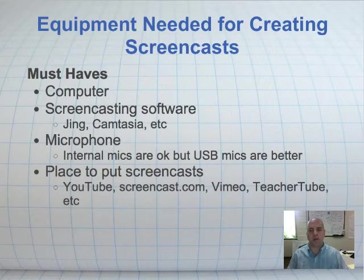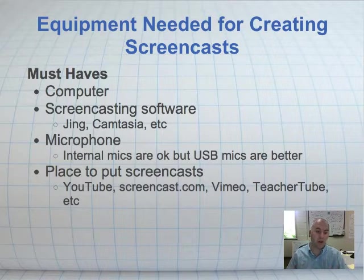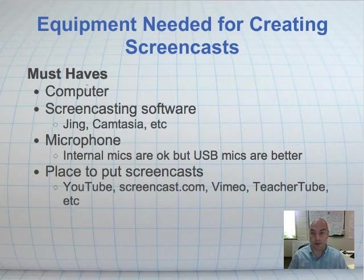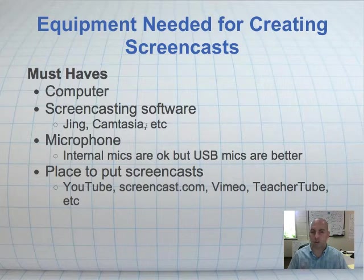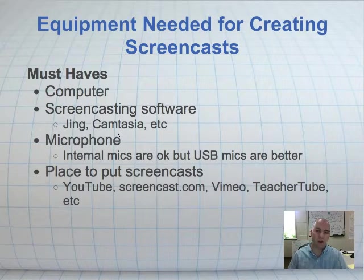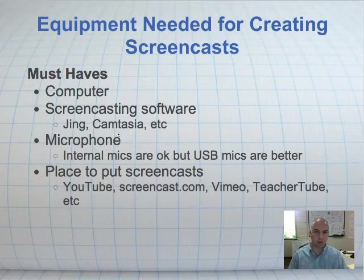In order to get going, here are a few things that you're absolutely going to need to make your screencast — things I want to make sure we have when we meet together. First, you're going to need a computer. You're going to need some kind of screencasting software to create that video — we're going to use Jing, sometimes we might use Camtasia, and there are other options I'll share. We're also going to need a microphone. Some computers have an internal mic installed, and those are okay — they'll do the job.